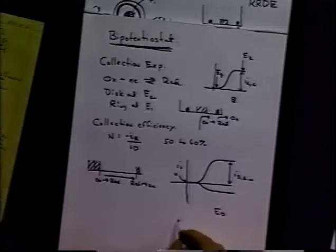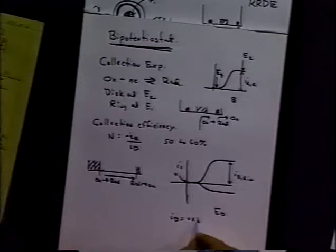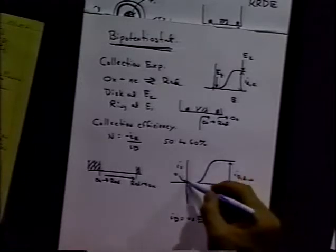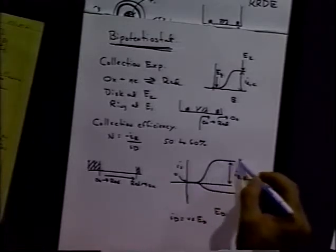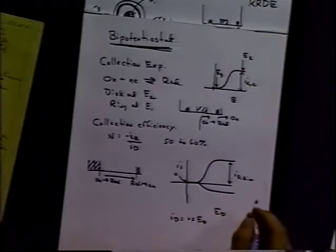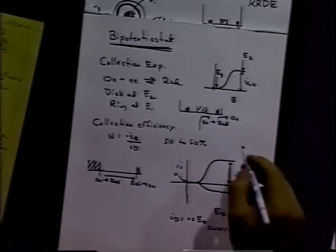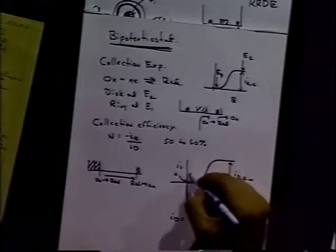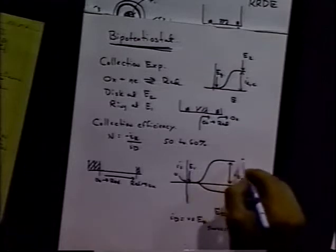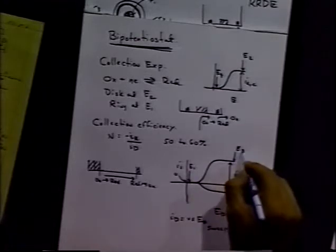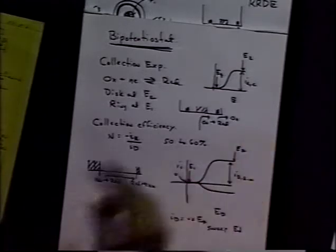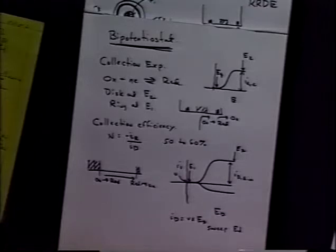First of all, we can have a system where we plot I sub D versus E sub D. We have the diffusion current. We can sweep E sub D from E1 to E2. We'd get a normal looking wave, like a steady state wave.